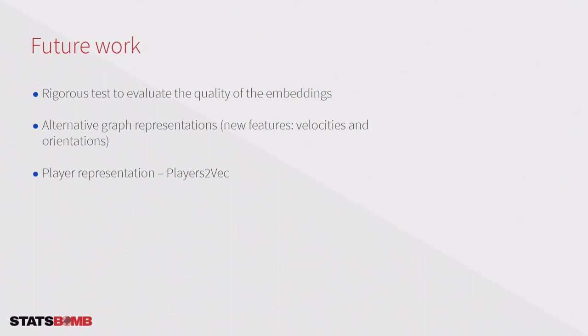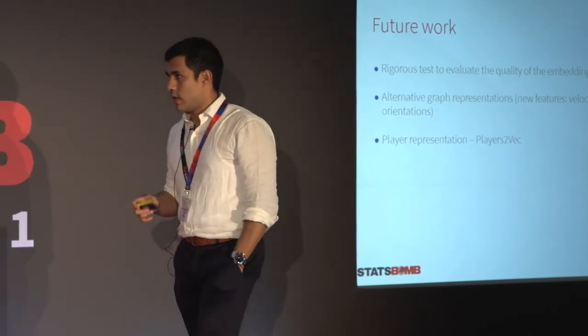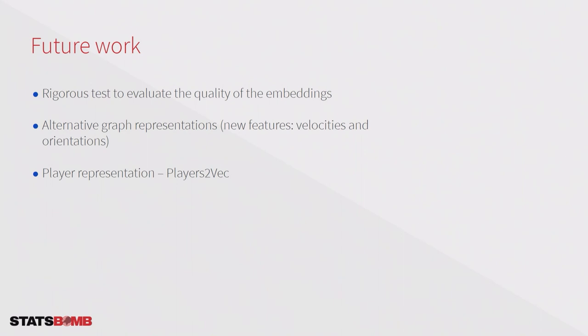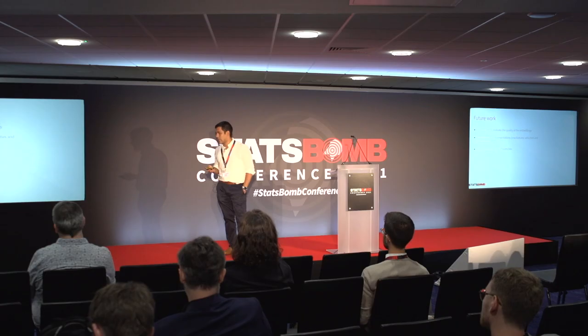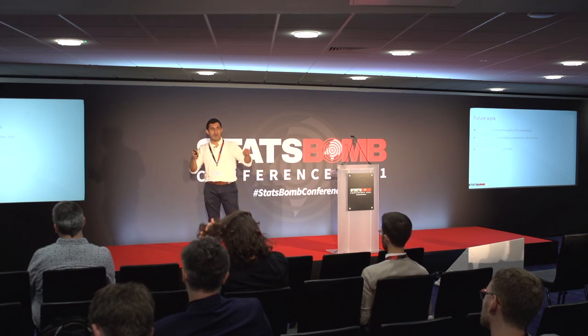Here I've shown you an introductory work that aims to generate embeddings from football actions, incorporating all the context that StatsBomb 360 data provides. But there is still room for improvements. First, we need a more rigorous test — here I only showed a manual evaluation, and a more rigorous evaluation of the embeddings should be created. Second, we can try alternative graph representations and add features at node and edge level, such as player velocity or orientation. Finally, I think these embeddings could be used to create player representations and find similar players. Thank you.